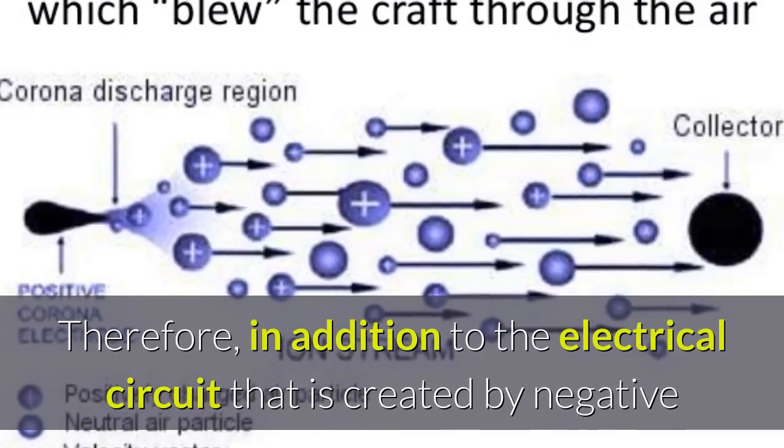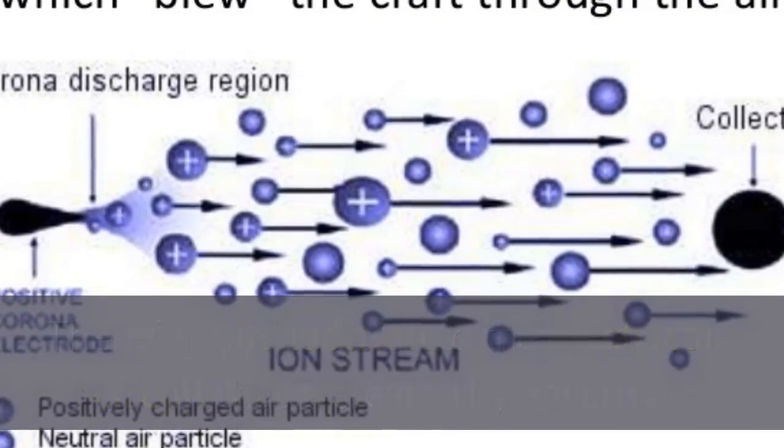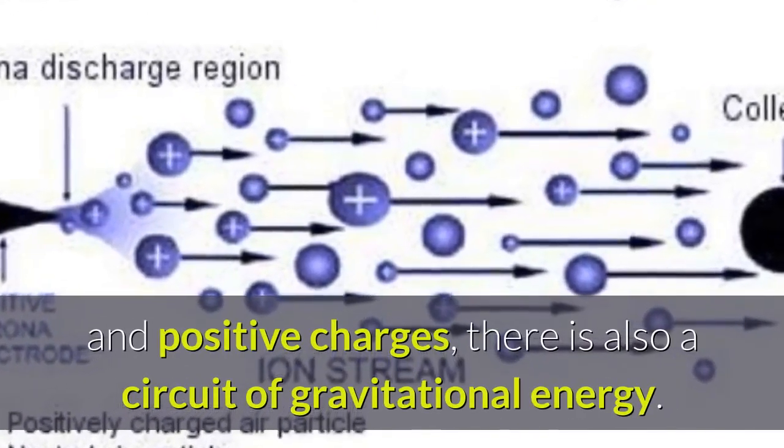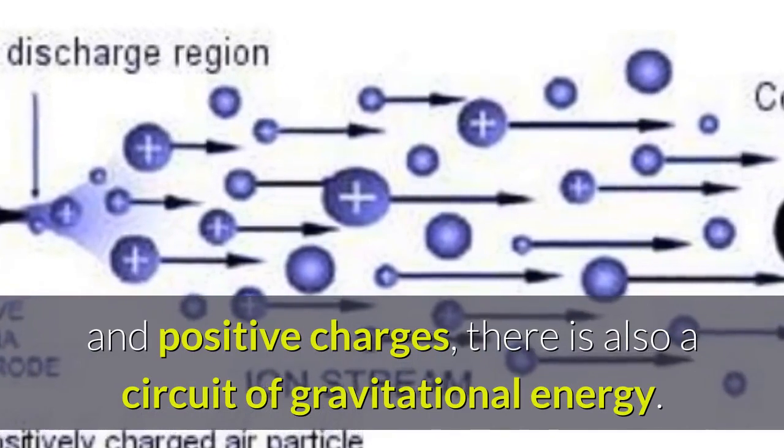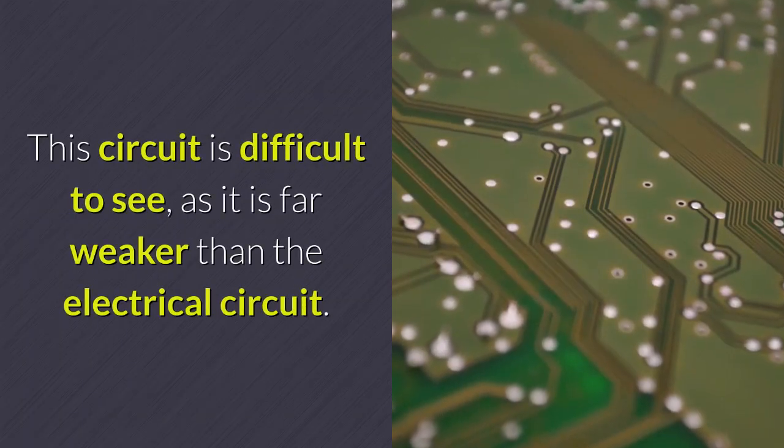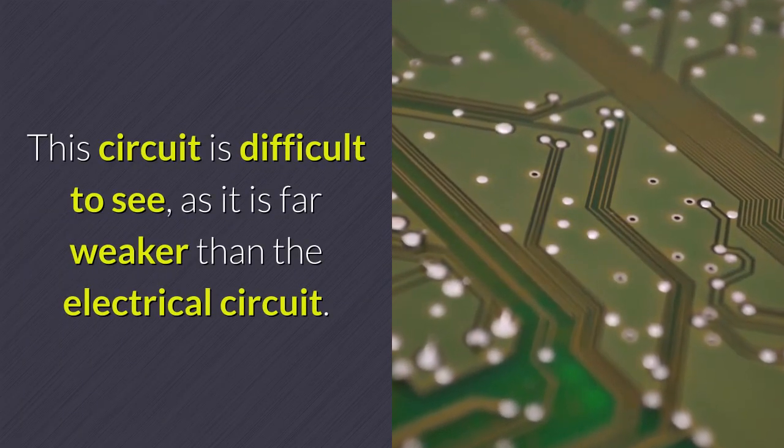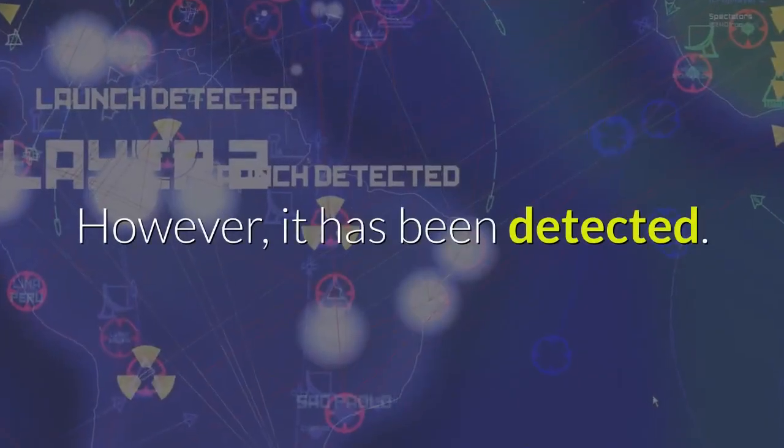Therefore, in addition to the electrical circuit that is created by negative and positive charges, there is also a circuit of gravitational energy. This circuit is difficult to see, as it is far weaker than the electrical circuit. However, it has been detected.